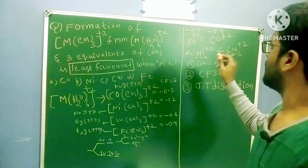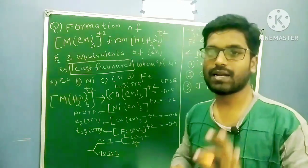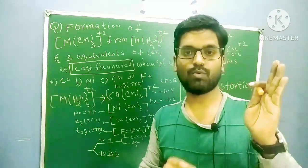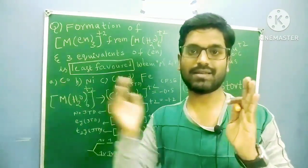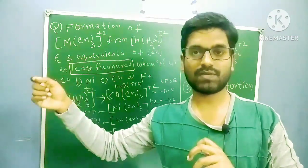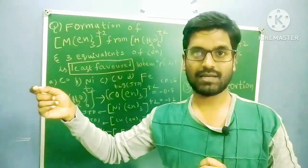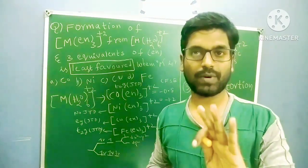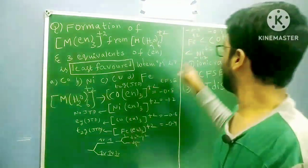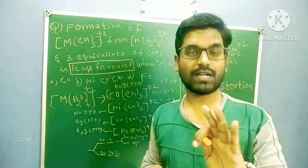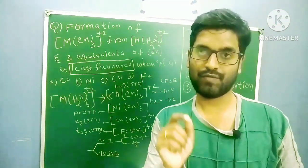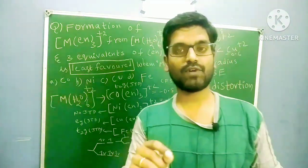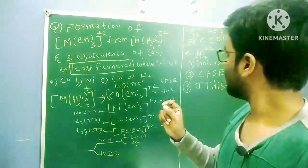First reason: ionic radius. When moving from left to right in the transition series, ionic radius decreases, and as ionic radius decreases and charge increases, stability of the complex increases. According to this first point, Cu²⁺ complex is more stable and Fe²⁺ is least stable, so Fe²⁺ should be the answer by this factor.